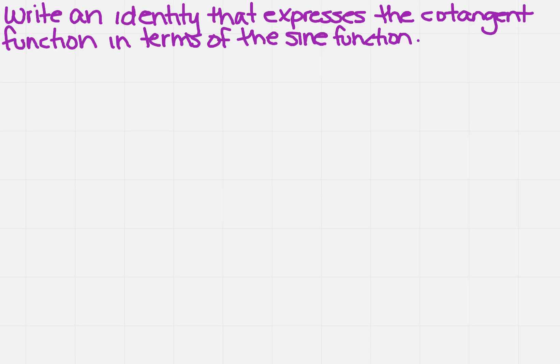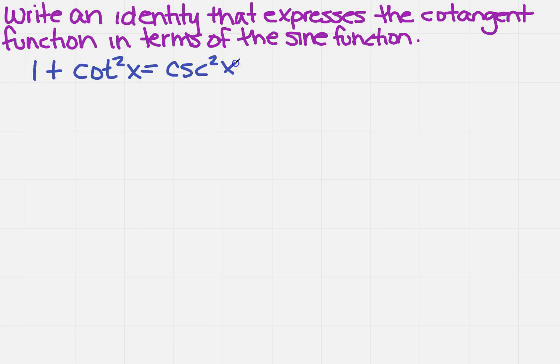We want to write an identity that expresses the cotangent function in terms of the sine function. The rule I can think of right off the bat is 1 plus the cotangent squared of x equals cosecant squared of x.